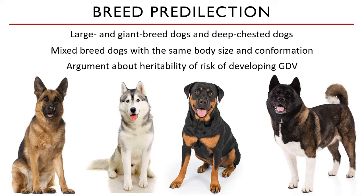One question I'll pose to you: can GDV also happen in smaller dog breeds or even in cats? Yes, they are occasionally affected, but it is quite rare. One study actually found that Dachshunds appear to be at increased risk even though they are a small breed.